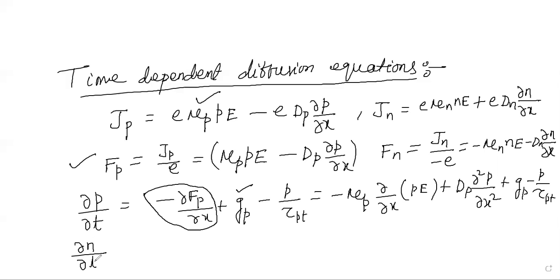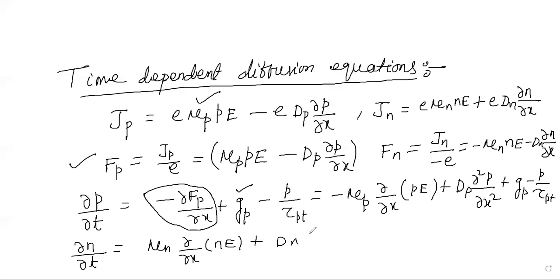Similarly, for del n by del t — the variation of electron concentration with respect to time — we substitute the electron flux. The result is: mu_n times del(nE) by del x, plus D_n times del squared n by del x squared, plus G_n minus n by tau_nt.